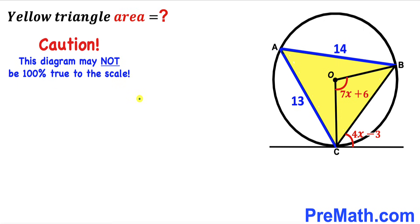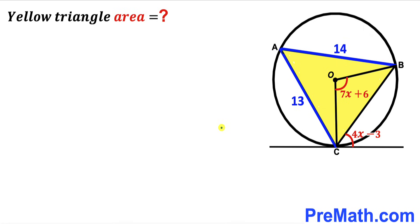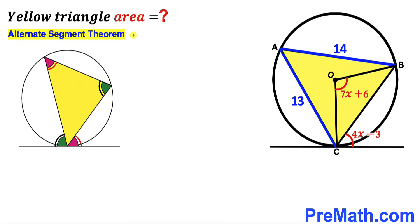Please keep in mind that this figure may not be 100% true to scale. Let's get started with the solution. Our first observation: this is our tangent line with point of tangency C, and the angle with the tangent is 4x minus 3 degrees. Recalling the alternate segment theorem, the angle with the tangent line is congruent to angle BAC, so angle BAC equals 4x minus 3 degrees.